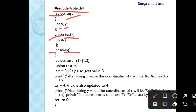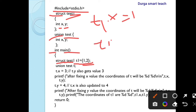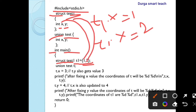I am declaring one structure variable. The syntax is struct, structure name is 'test', t1 is the variable, initialized with values. t1.x contains 1, t1.y contains 2. So 1 is stored at x and 2 is stored at y. t1 is the variable, and the dot operator is used to access the members of structure — that's why t1.x equals 1 and t1.y equals 2.